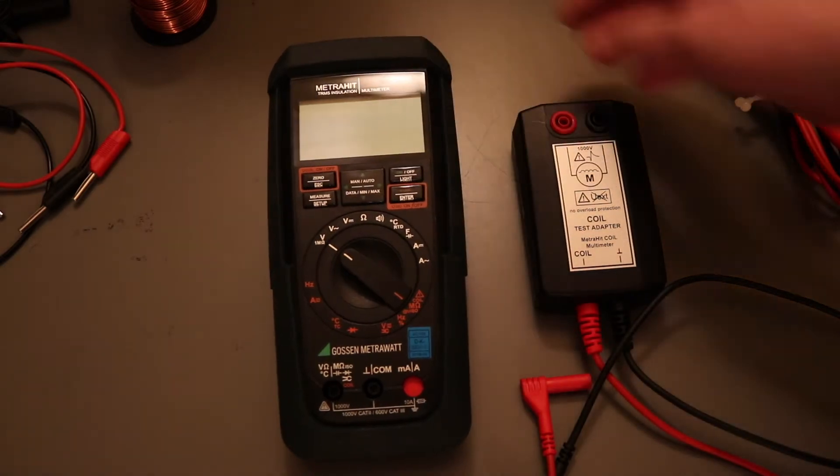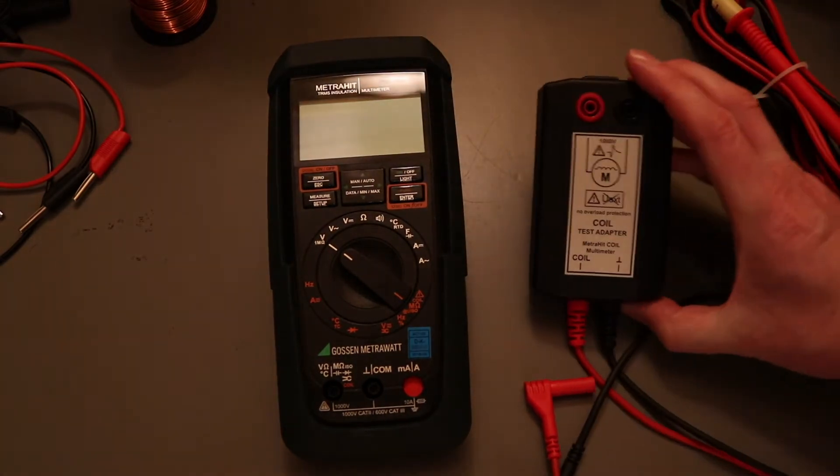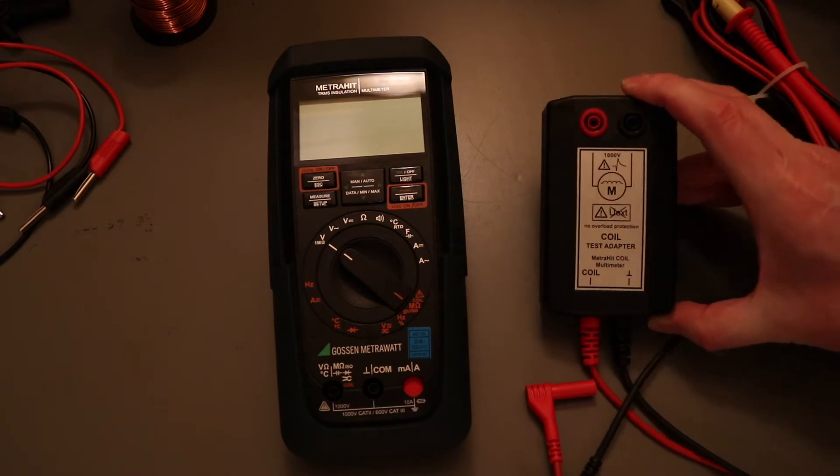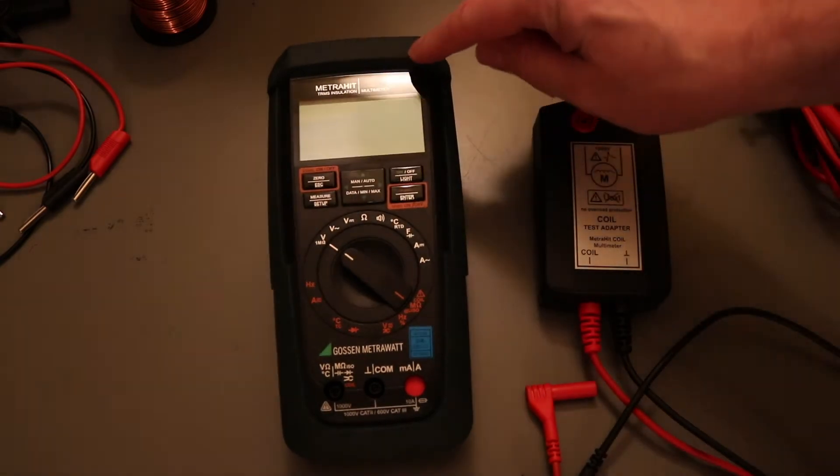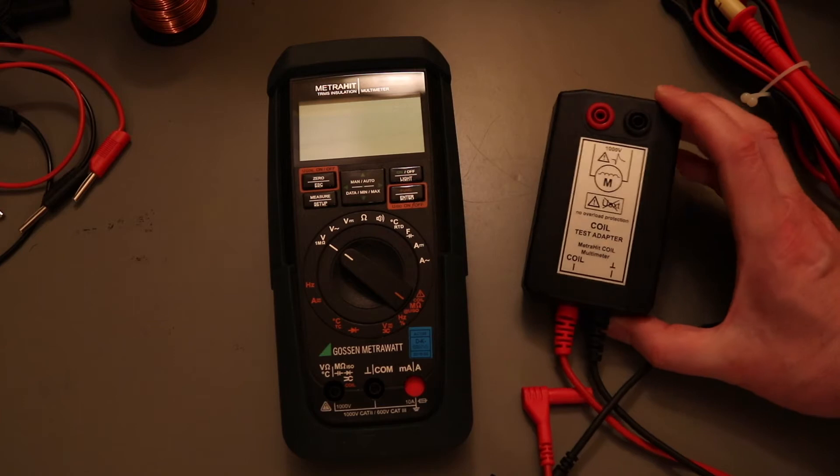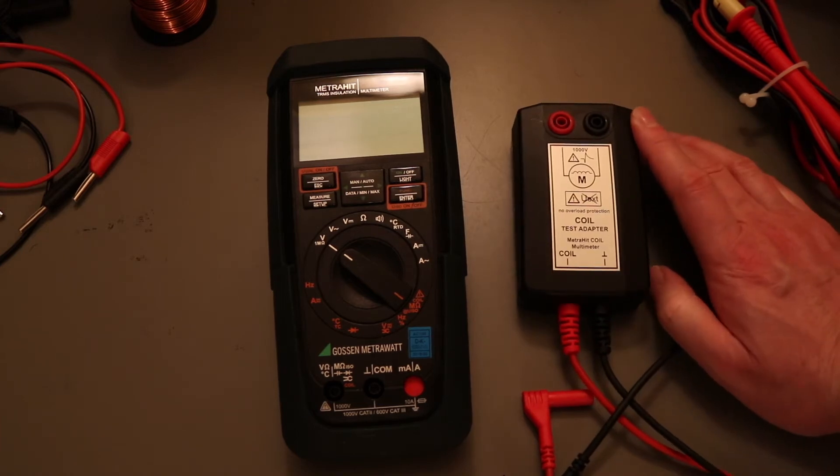This is the main meter that's come in the kit. It also comes with this coil test adapter. This is the element that's unique to this instrument for testing for interturn faults in motor windings.